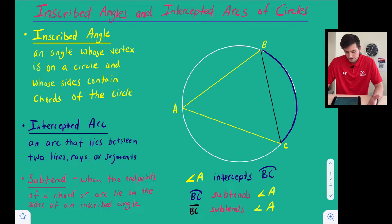So this would be like angle BAC or you could just call it angle A for right now. So the vertex here is right there on the circle and the two sides of the angle are chords AB and chord AC. So that's what we call an inscribed angle.